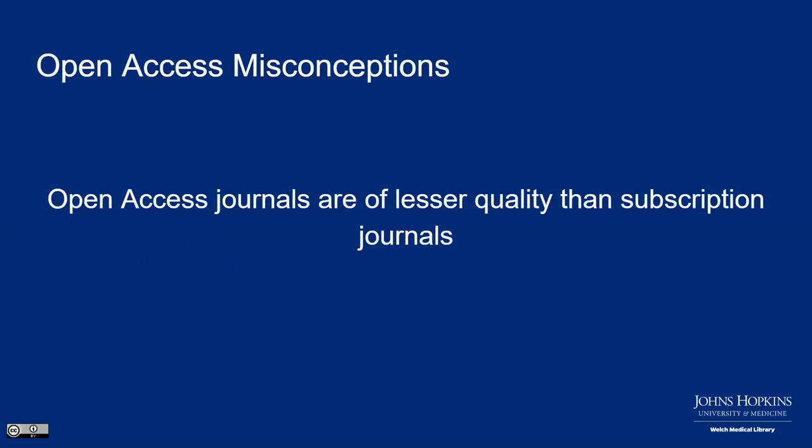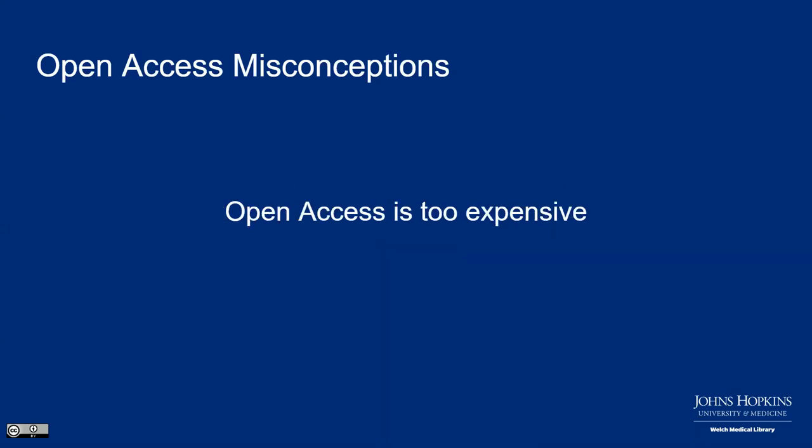There are several misconceptions I'd like to address. First: open access journals are of lesser quality than subscription journals. This is not always the case, and as early as 2014 there was information about open access journals being at or near the top of every discipline in the sciences. Second: open access is too expensive. I'll be addressing the different kinds of open access that can help make clear the costs involved and where you might not need to pay at all.